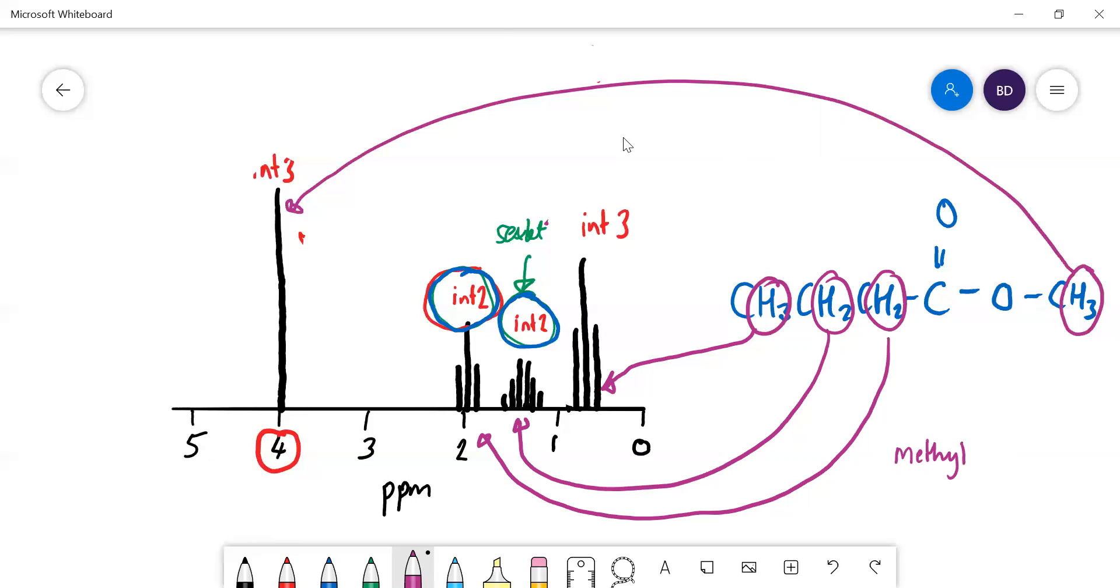And the name of that would be methyl butanoate. It's an ester. We haven't done much about esters yet. We did a little bit in GCSE, but we'll be doing them soon. So that is what we've got. Okay, thank you.